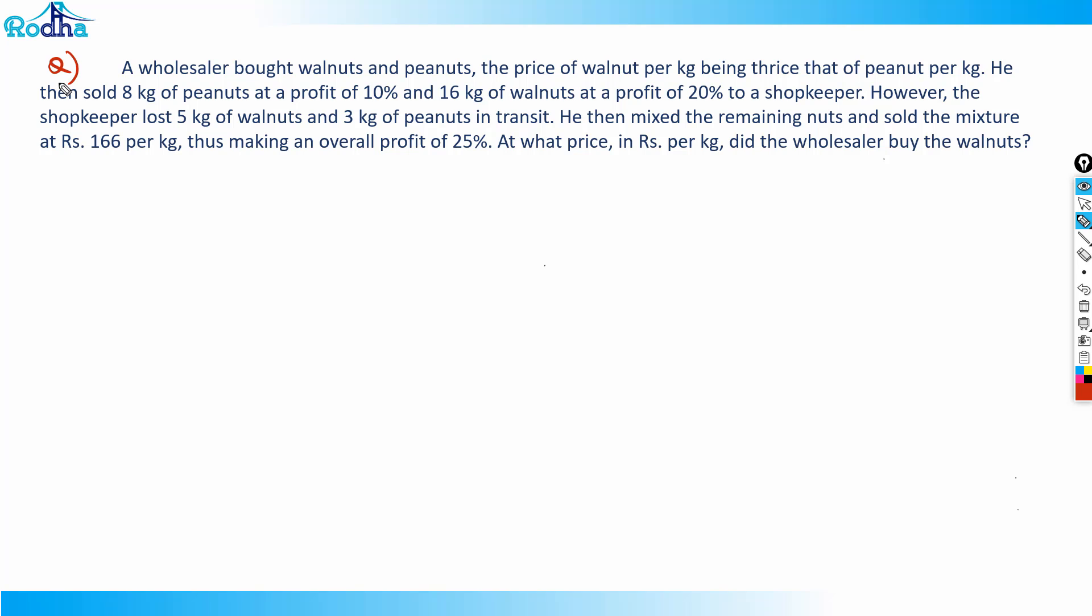Okay, hi guys. Look at this question from CAT 2018. A wholesaler bought walnuts and peanuts, the price of walnut per kg being thrice that of peanut per kg. He sold 8 kg of peanuts at 10% profit and 16 kg of walnuts at 20% profit to a shopkeeper. However, the shopkeeper lost 5 kg of walnuts and 3 kg of peanuts in transit. He then mixed the remaining nuts and sold the mixture at Rs 166 per kg, making an overall profit of 25%. At what price in rupees per kg did the wholesaler buy the walnuts?